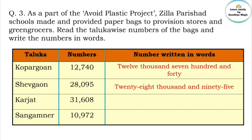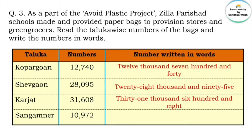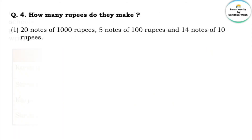For Karzat taluka, the number of bags given is 31,608 — thirty-one thousand six hundred and eight. For Sangamner taluka, the number of paper bags given is 10,972 — ten thousand nine hundred and seventy-two.